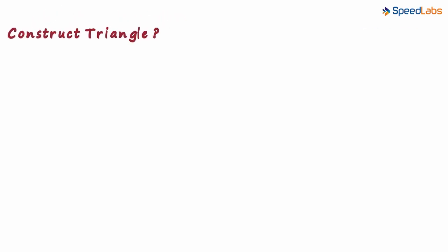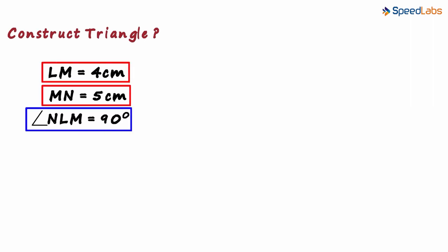How can we construct a triangle with the following information? We are given the length of two sides and a measure of an angle. Measure of angle NLM is given to us as 90 degrees.